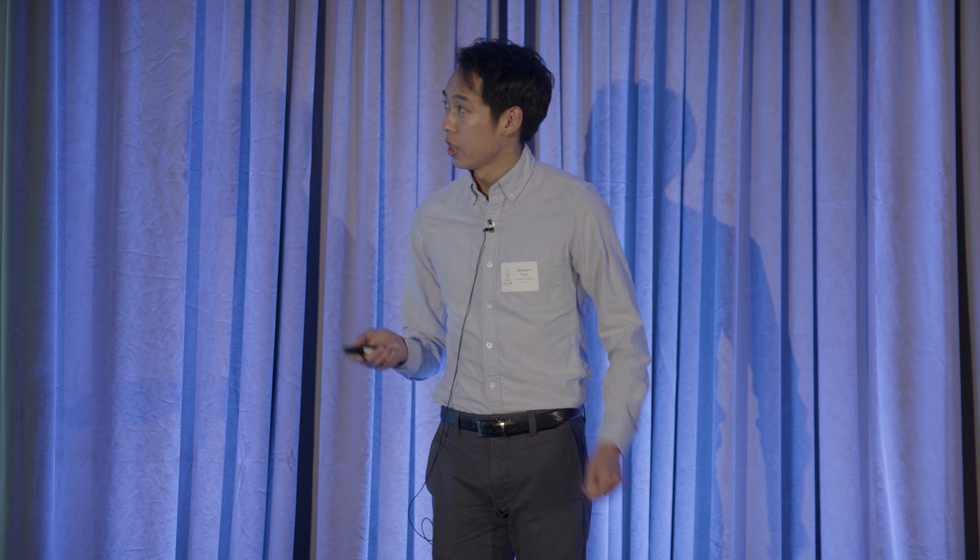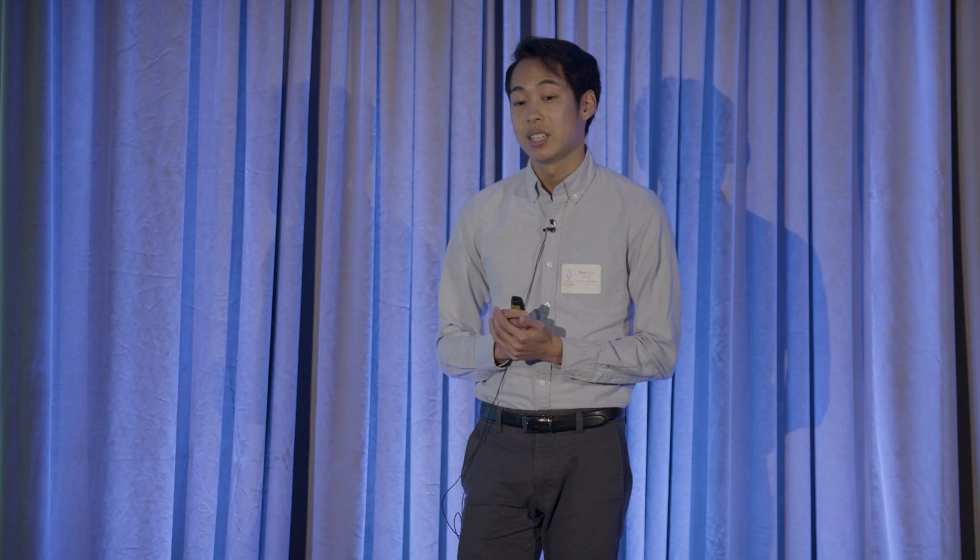My goal is to develop a better vaccine by targeting parts of the virus that do not mutate as frequently. As a genetics student, the first place I looked at was the DNA sequences of one million COVID samples from around the world, including data from every variant.